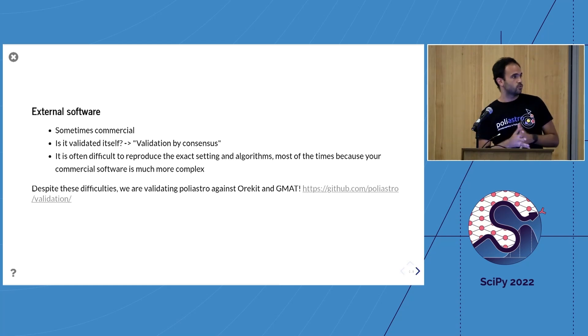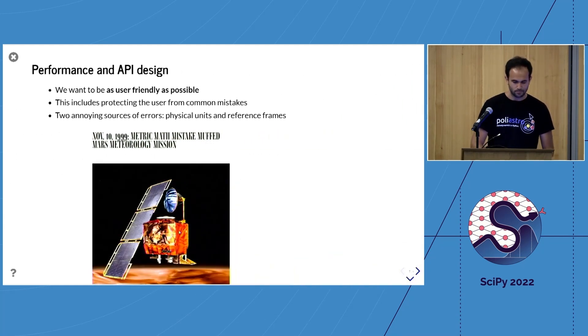Another thing you can do is validate against some external software that hopefully is validated itself. But one ends up doing validation by consensus. Like, okay, if these three different pieces of software all gave the same answer, then we assume it's correct—or maybe we're all mistaken in the same way, but hopefully the probability is lower. We're actually doing validation against Orekit and GMAT, two other software packages for astrodynamics.